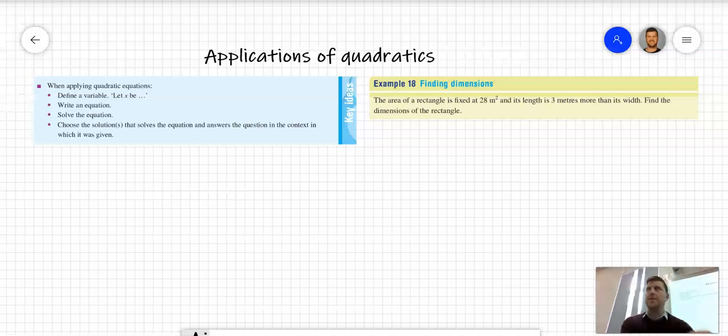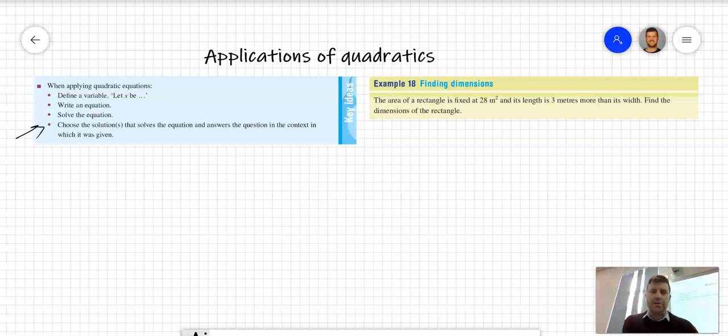Write an equation, then solve the equation. Today we'll use the null factor law to solve. The last point says choose the solution that solves the equation and answers the question in the correct context. When we use the null factor law, we often have two solutions, but for some problems there can only be one solution.